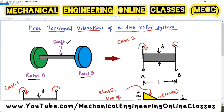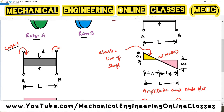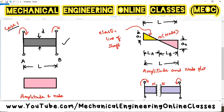We have to consider two cases under this topic. Case 1 is about two rotors rotating in the same direction. Look at this figure. There are two rotors on two sides of the shaft. Rotor A is rotating in the clockwise direction and rotor B is also rotating in the clockwise direction. The shaft in this case will not be subjected to any twist because on either side of the shaft the rotors are rotating in the same direction. Hence, the shaft also rotates but it will not vibrate.